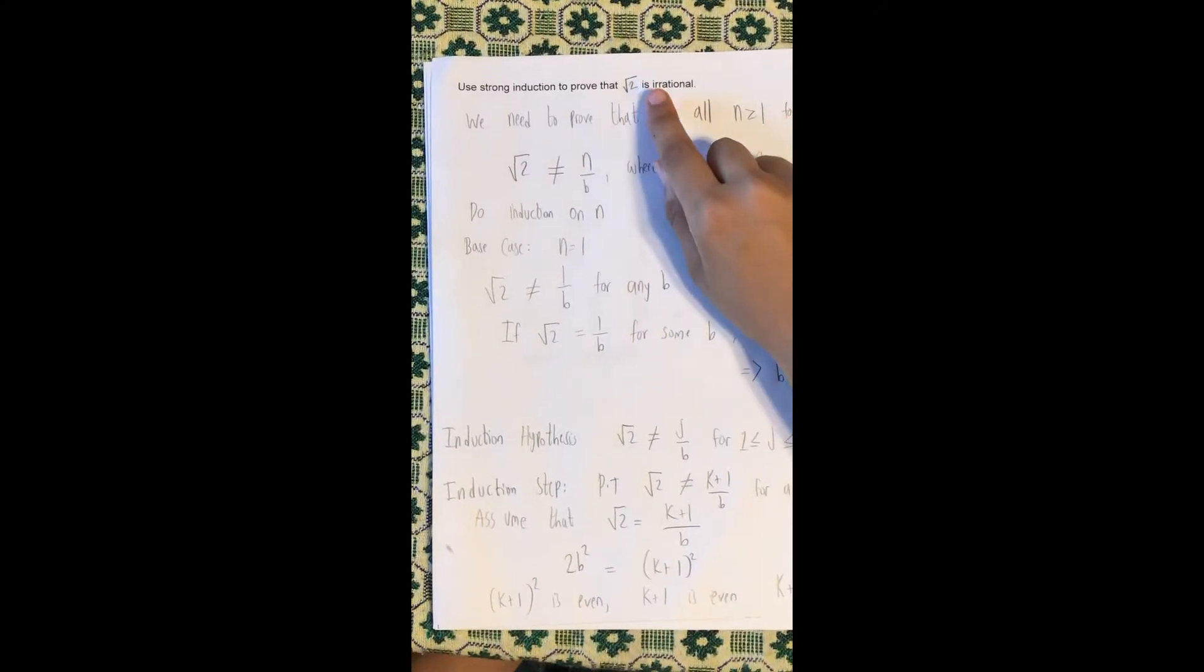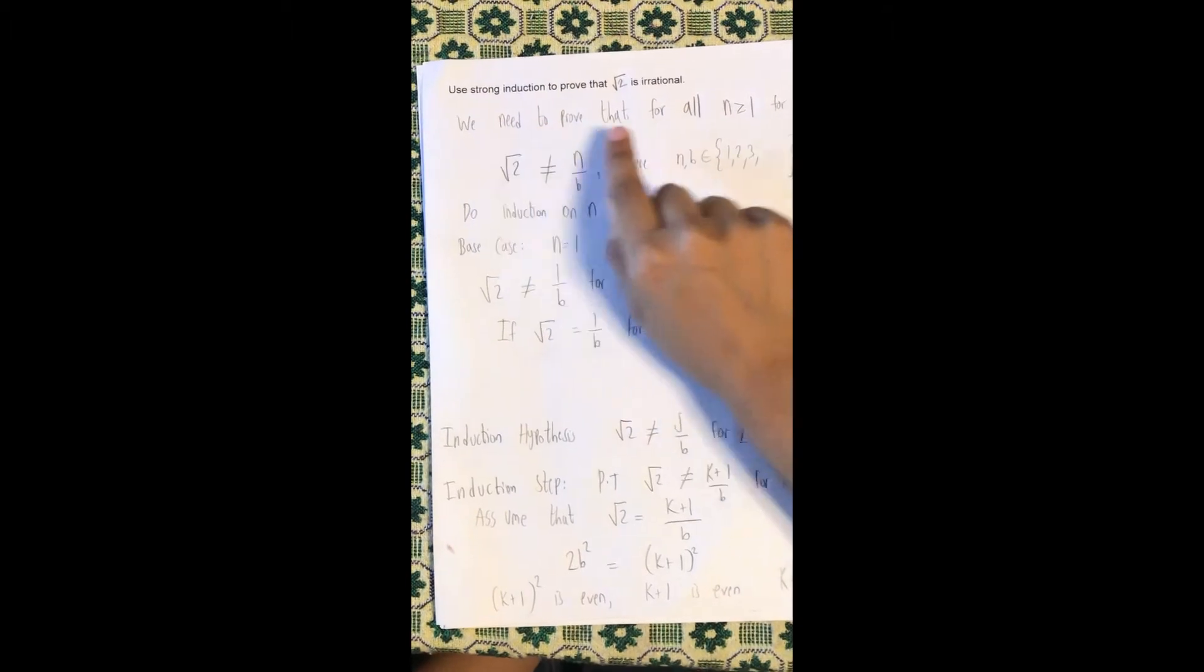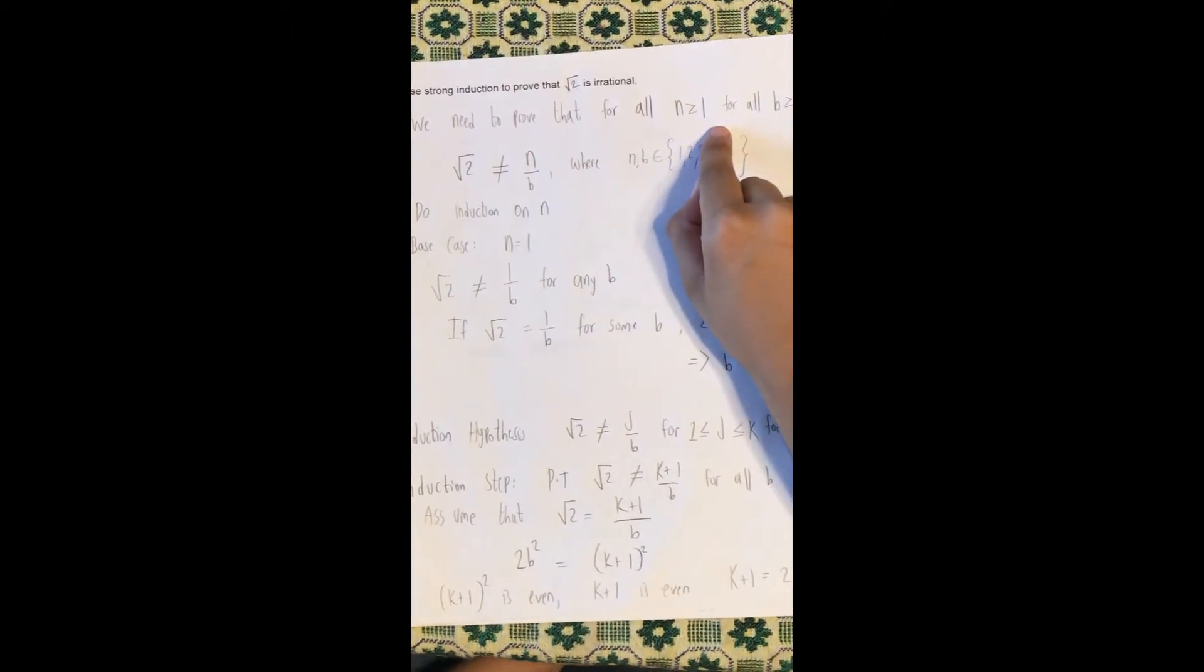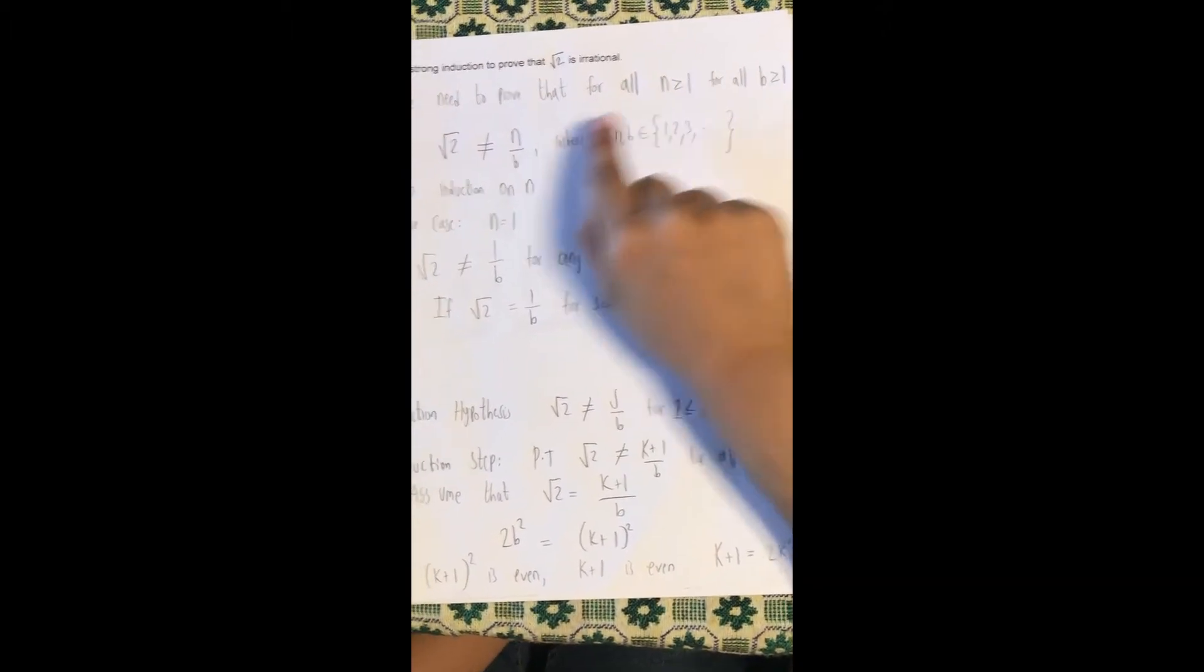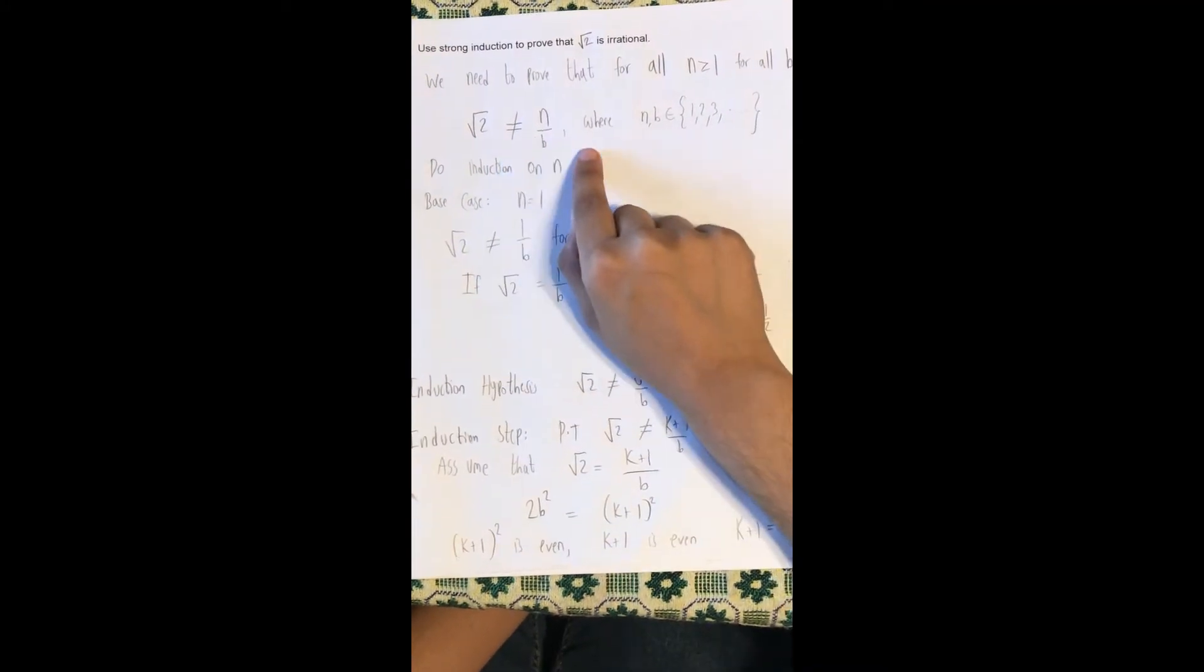Here, we're going to prove that square root of 2 is irrational. We need to prove that for all n greater than or equal to 1, and for all b greater than or equal to 1, square root of 2 is not equal to n over b.